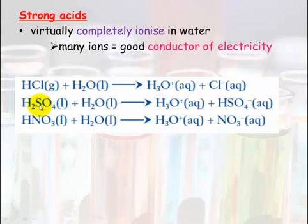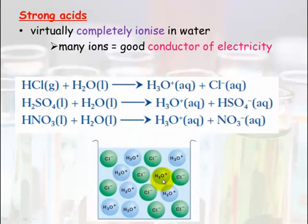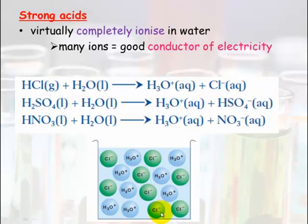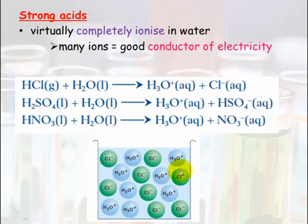These acids here virtually completely ionize in water. Here's what it looks like when hydrochloric acid is put into water — we have chloride ions and hydronium ions. Normally in a diagram like this you'd still see some HCl molecules, because it doesn't completely ionize — it virtually does, about 99% ionized. So you can see it's 99.9% ionized.